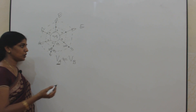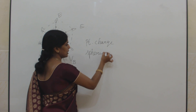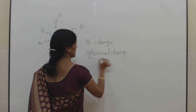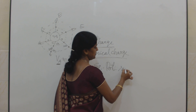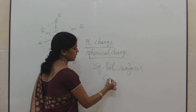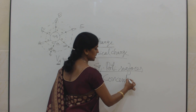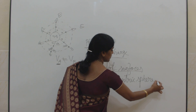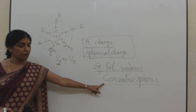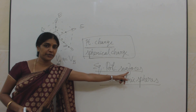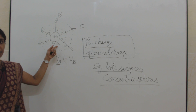Now, I have taken an example for a point charge. For a point charge or a spherical charge, this will be the shape of the equipotential surface — it will be in the form of concentric spheres. At all points on each spherical surface, the potential will be the same. This is the equipotential surface.